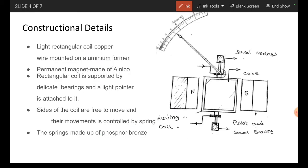Then coming to the construction, we are considering the rectangular coil, that is a copper wire mounted on an aluminum former. This coil is fixed on a shaft and this shaft is fixed on jewel bearings.